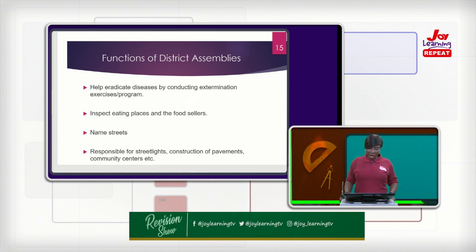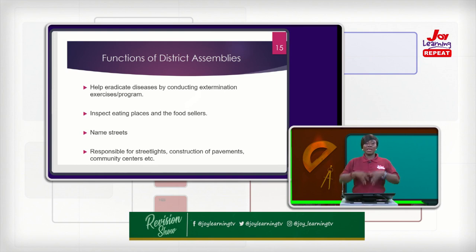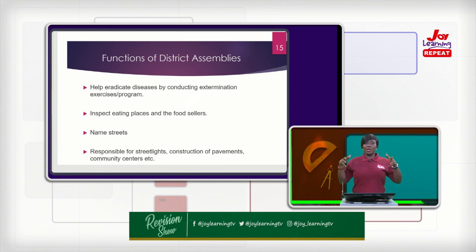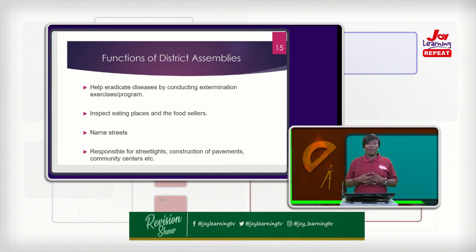They also construct pavements where contractors had built roads and left no place for pedestrians — it is the responsibility of the assembly to pave a place for pedestrians to be safe from cars or vehicles. Then they also construct community centres where young people can go and exercise and have a little fun.